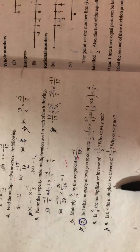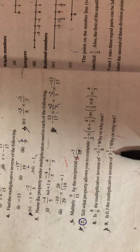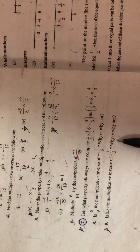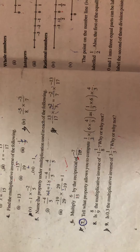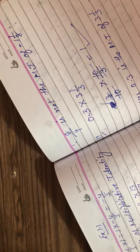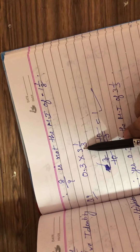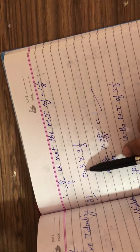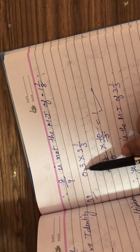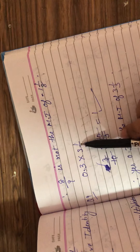Now coming to the next question, number 9: is 0.3 the multiplicative inverse of 3 and 1 by 3? Why or why not? Again, for that we have to find the product of 0.3 and 3 and 1 by 3, and check whether 0.3 is the multiplicative inverse of this number.